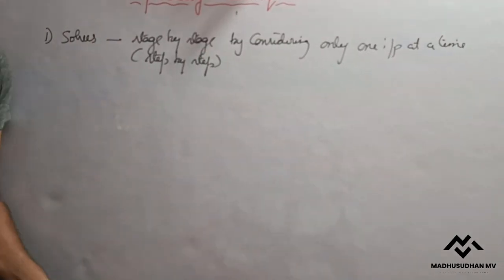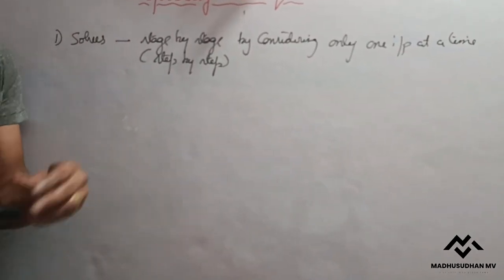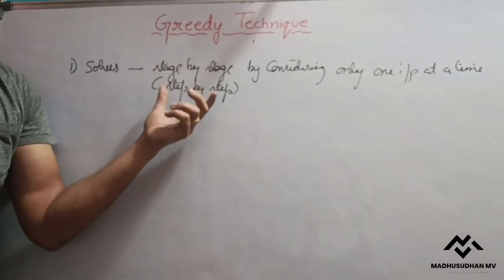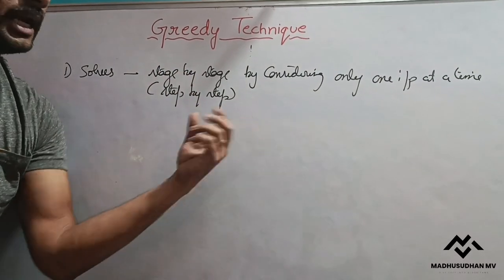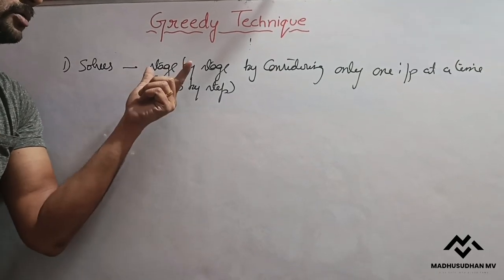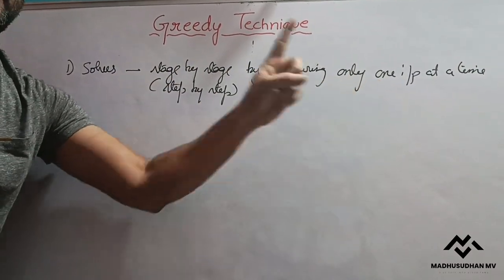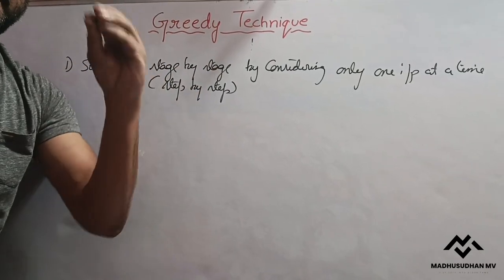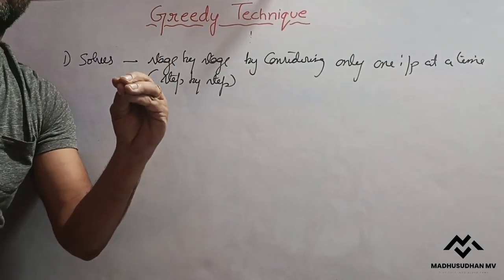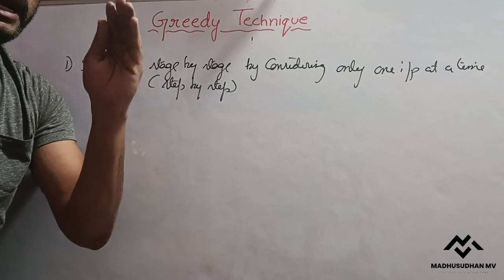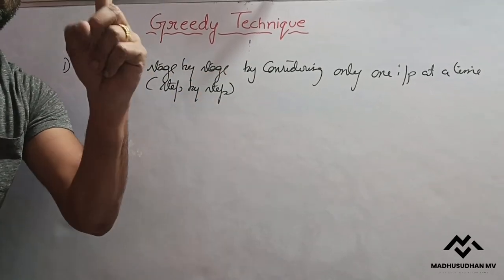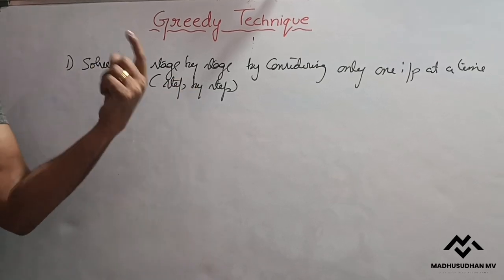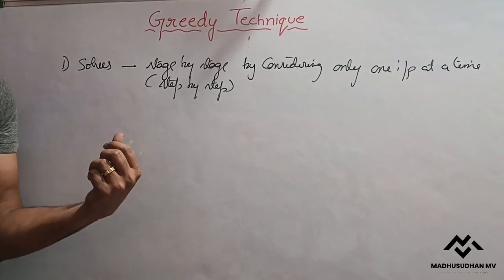For problems which have multiple inputs, greedy proceeds stage by stage by taking only one input at a time. First step it takes one input, second step one more input, third step one more input — like that, at every stage it takes only one input and keeps adding them.